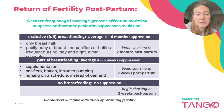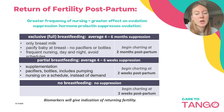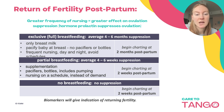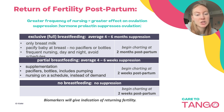If you are partial breastfeeding, ovulation may return within four to six weeks, so you can start charting at two weeks postpartum. This would include implementation of supplements, pacifiers, bottles including pumping, and nursing on a schedule instead of on demand. If you are not breastfeeding at all, there is no suppression, so you should begin charting at two weeks postpartum.